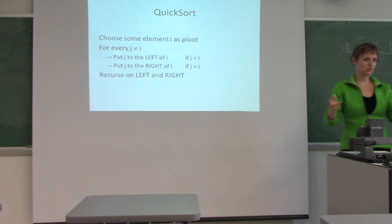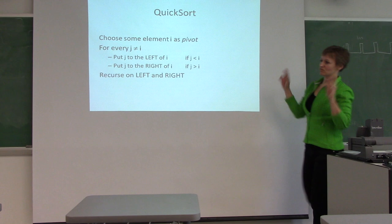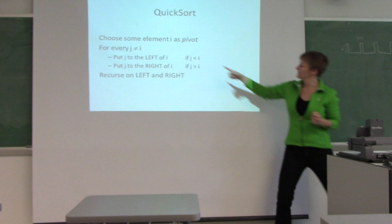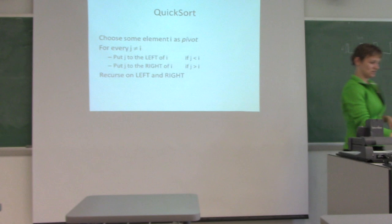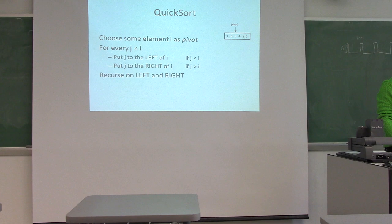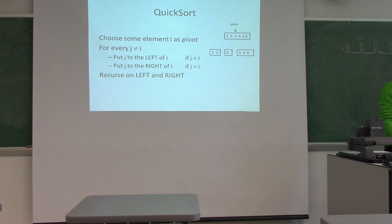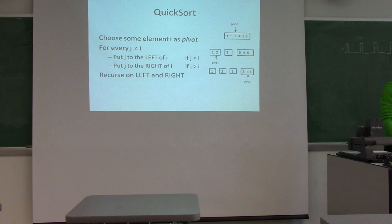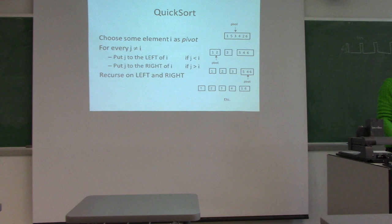Just to remind everyone how quicksort works: you choose an element as pivot, put every element J to the left if J is less than the pivot and to the right if J is greater, then recurse on both sides. For example, sorting {1,2,3,4,5,6} with pivot 3: one and two go left, five, four, and six go right, then recurse.